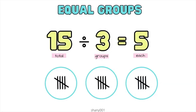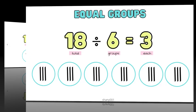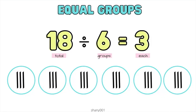Let's look at another example: 15 divided by 3 equals 5. We have 15 in total, we made 3 groups, and there are 5 in each group. Here is another example: 18 divided by 6 equals 3. There are 6 groups, 3 in each group, which gives us a total of 18.